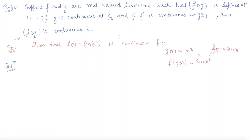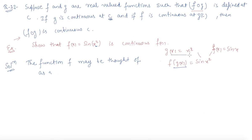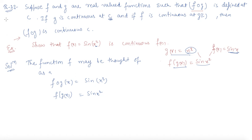Observe that the function is defined for every real number, since x² is defined for all real values of x. The function may be thought of as a composition of two real functions. Since both g(x) = x² and f(x) = sin(x) are continuous at all points, f of g of x, which is sin(x²), is continuous at all values of x. So this theorem holds true for all values of C.